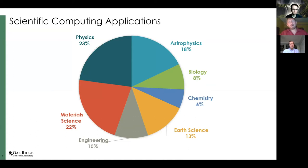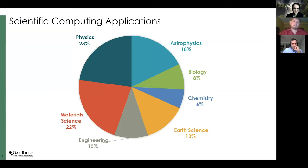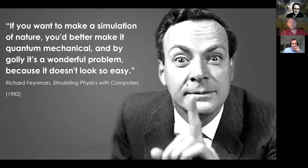If you look at how these supercomputers are being used, it's dominated by simulations of materials, chemistry, astrophysics, nuclear physics, and plasma physics, with additional work in biology, engineering, and earth science — many involving partial differential equations. The supercomputers are built specifically to solve these types of physical problems. This brings to mind Richard Feynman's quote: if you want to simulate nature, you'd better make it quantum mechanical — a wonderful problem because it doesn't look easy.